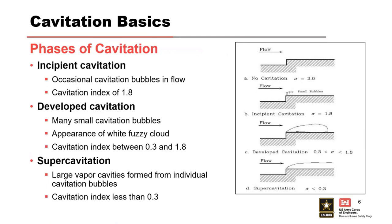Just some basic definitions. The cavitation index is based on a dimensionless number called the Euler number — really the relationship of pressure and inertia. The lower the number, the more severe the cavitation. Above three, we don't have much concern. Once we get below one, we start having potential for cavitation that means something for structural elements like concrete. Below 0.3 is when we historically really start to see damage to concrete.